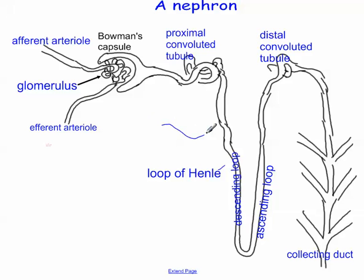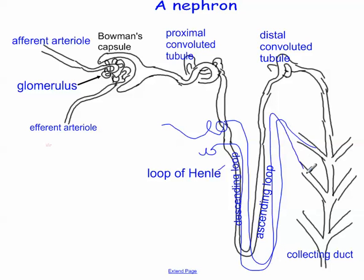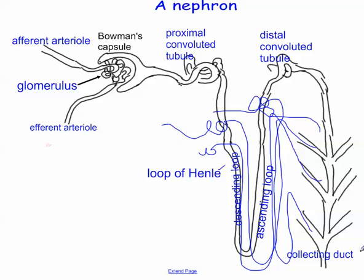Here's another convoluted tubule, another descending loop, ascending loop, and this one is emptying into the collecting duct. There are multiple nephrons all feeding into it, each with their own glomerulus. Those are the main vocabulary words — see if you can wrap your tongue around all of that, and then hopefully start to understand the function of each of these parts. There's a great animation online — just type 'interactive kidney' into Google and you'll get something really neat.